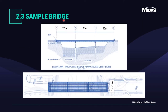This is our sample bridge that we'll be modeling and designing as per AS 5100. It's a three-span Super T composite superstructure: first span 32 meters, second 35 meters, third 32 meters. We won't be modeling the abutments — instead we'll apply boundary conditions and model the intermediate piers. The total width of the bridge is 17.76 meters.